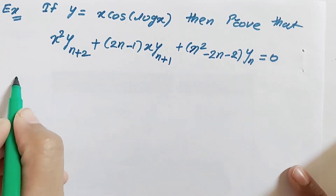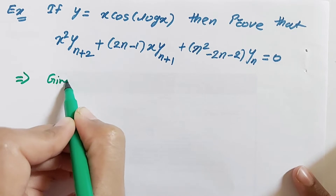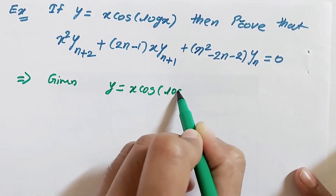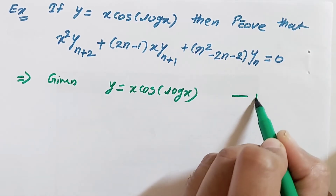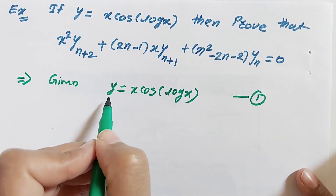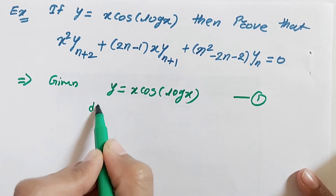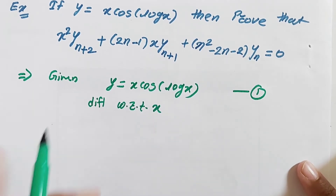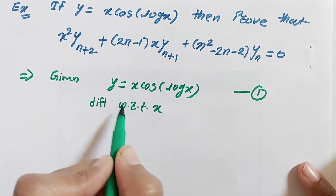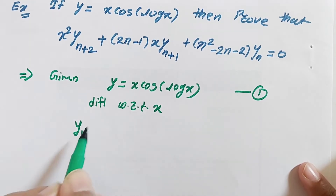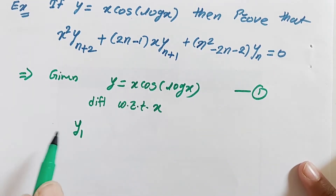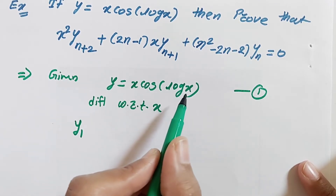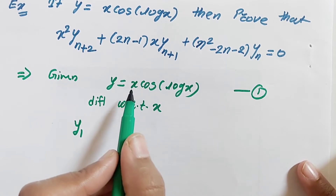The given statement is y equals x·cos(log x) — consider this equation 1. We have to differentiate this term with respect to x. The derivative of y with respect to x is denoted by y₁, the first derivative. The right-hand side contains x as well as cos(log x), so there are two terms in a product.